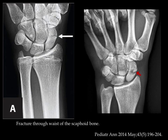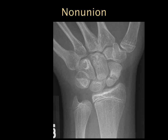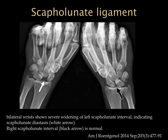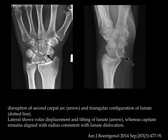Among common carpal fractures, scaphoid fractures must not be missed. They are particularly at risk for avascular necrosis due to vascular supply, and avascular necrosis leads to nonunion as seen in the image. An example of scapholunate ligament injury shows widening of the scapholunate interval on the left compared to normal on the right. Another example shows disruption of the carpal row arcs with a lunate dislocation visible on both frontal and lateral views.